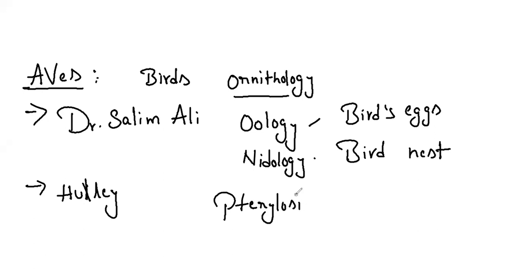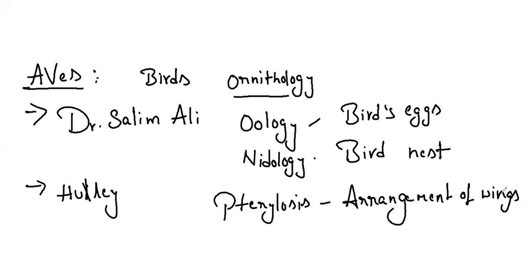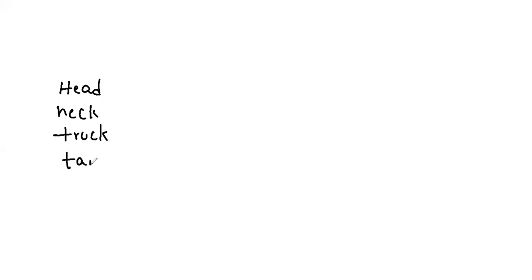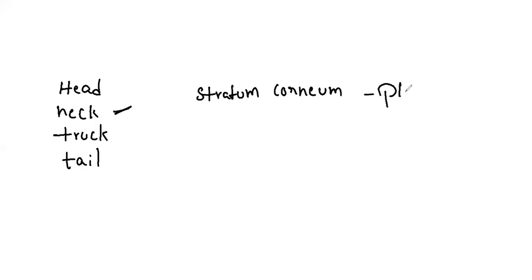Pterylosis is the arrangement of feathers on the body of the bird. The body is actually boat-shaped, divided into head, neck, trunk, and tail. The neck is long and flexible. The body is covered by soft feathers, which are a derivative of the stratum corneum and are present all over the body — that collection is called plumage. Scales are found only on the hind limbs.